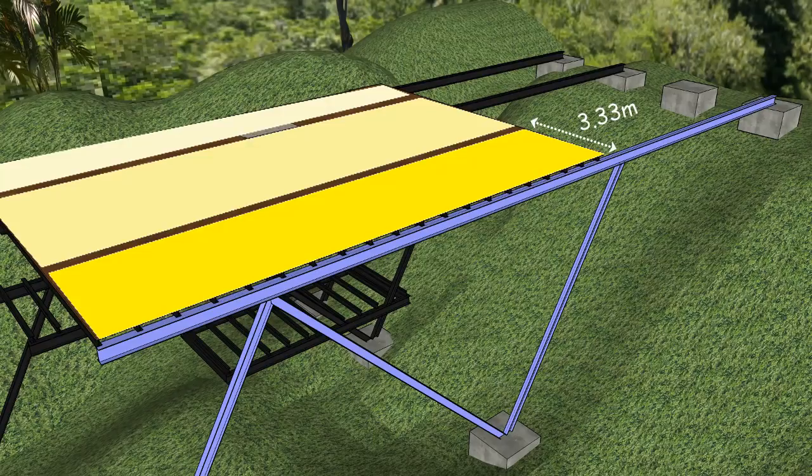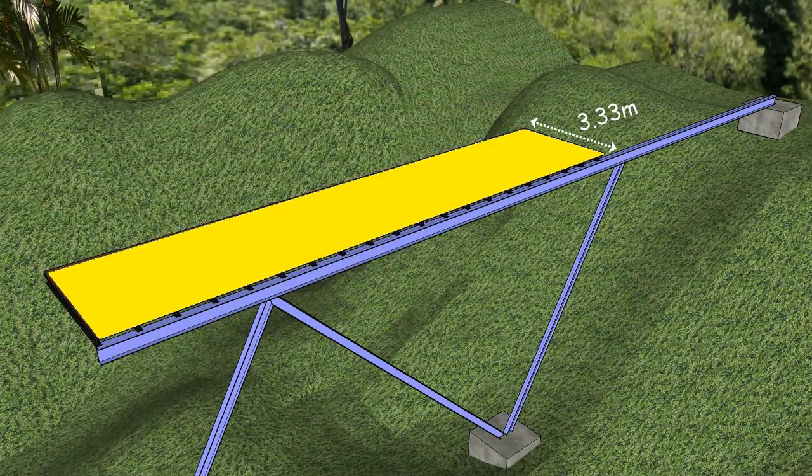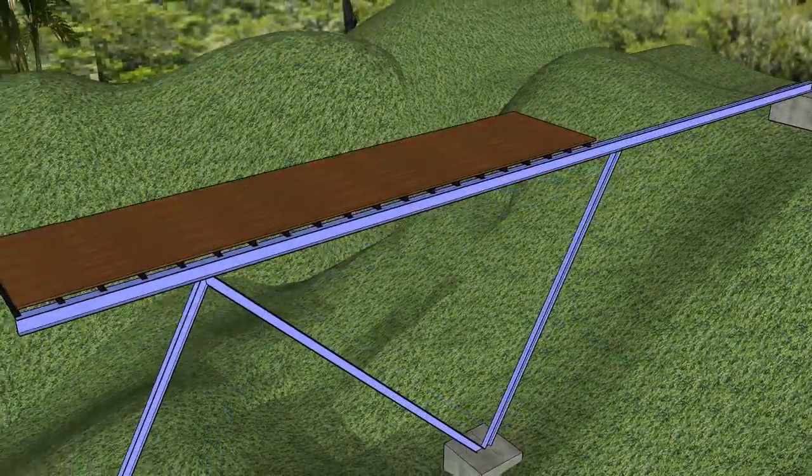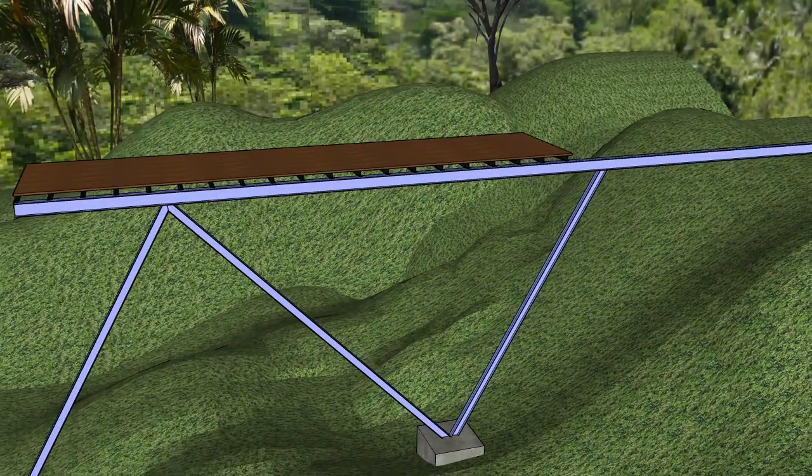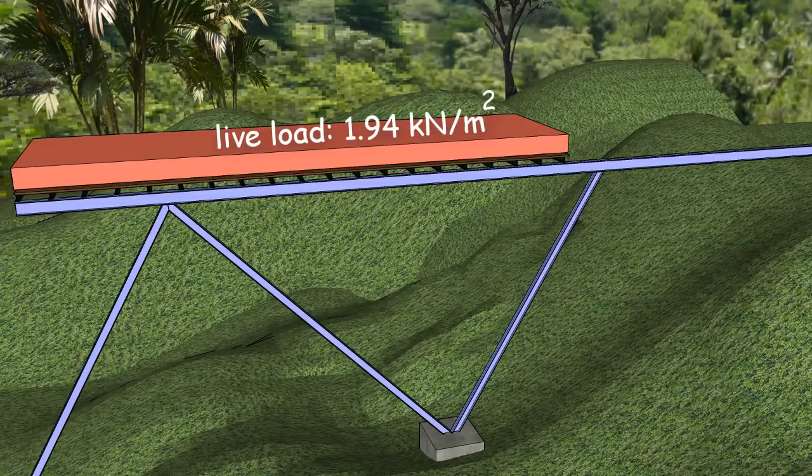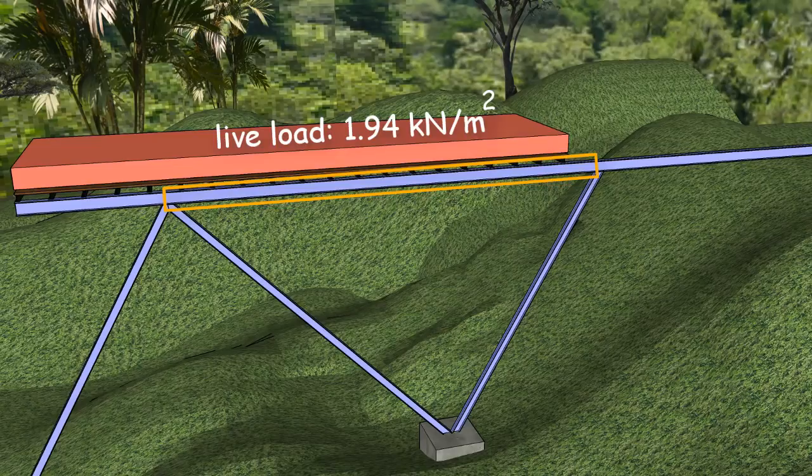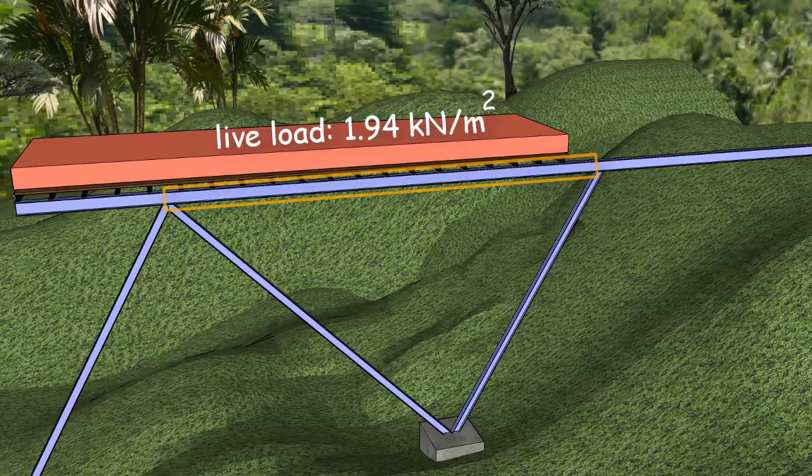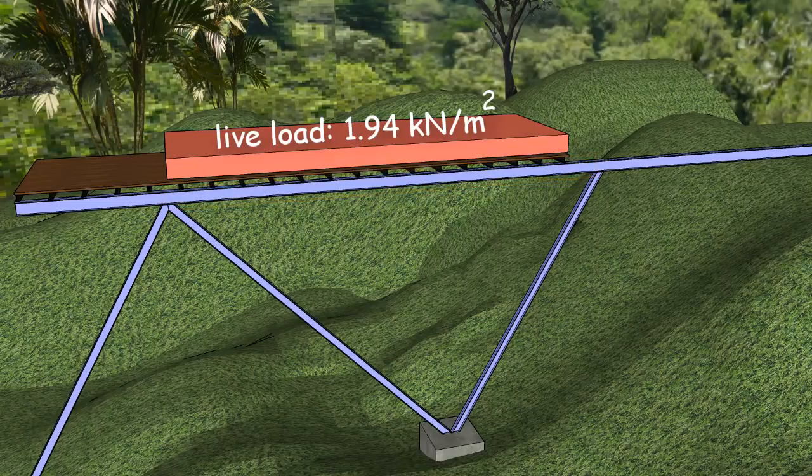Since we want to analyze the near frame, we are only interested in this tributary area. Suppose the floor carries a design live load of 1.94 kilonewtons per square meter. Bending moment in the middle segment of the beam reaches its maximum positive value when the segment itself is loaded, but there is no load applied to any of the adjacent segments, so we are going to place the live load on the middle segment only.